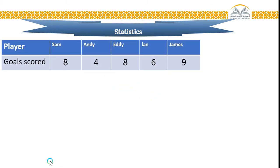Now, going to the third objective: statistics. Please look at this chart. I have here player and goals scored. The first line: I have player Sam, Andy, Eddie, Ian, James. All these players, everyone gets a number of goals.